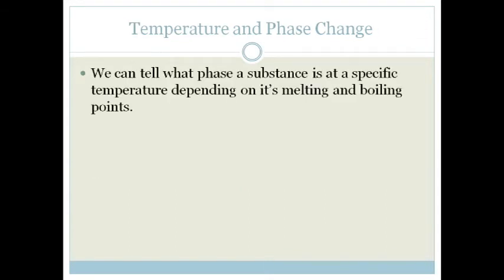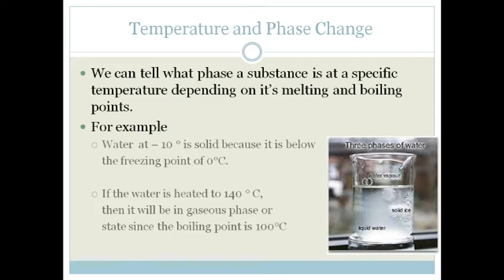Now we can tell what phase a substance is at a specific temperature if we know what its melting and boiling points are. So for example water. We know that water's freezing point, the temperature at which it goes from a liquid to a solid, is 0. So if the water is at minus 10 degrees we know that it's going to be solid because we know that the freezing point is going to be 0. However, we also know that the boiling point of water changing from a liquid to a gas is 100 degrees. So if the water is heated to 140 degrees Celsius we know it's going to be in the gaseous phase because it is above the boiling point.